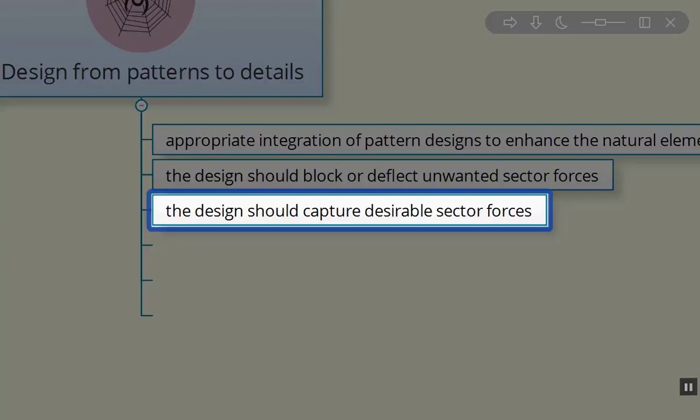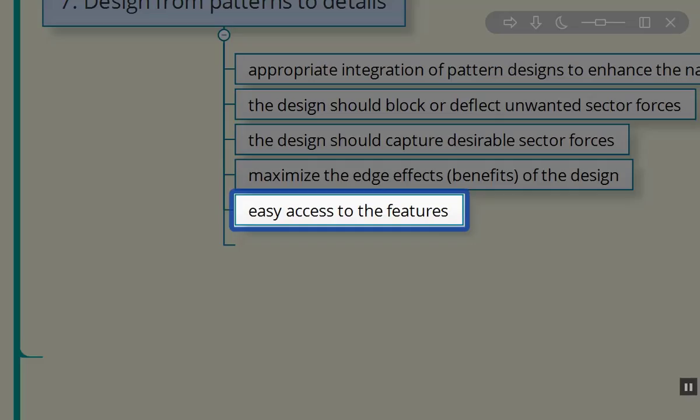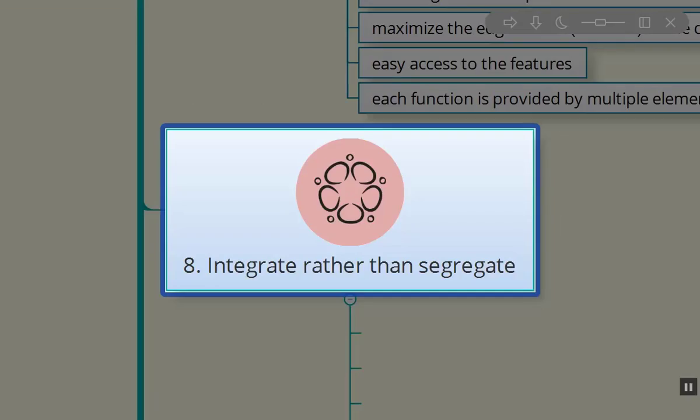They're designed to capture the desirable forces that are coming onto our site. They're to maximize the edge effects. The edge effect is the most beneficial effect in our design systems. Easy access to the features is important when we're integrating these design patterns. Each element should provide multiple function and each function should be met by the production of various elements. So we want one system to feed multiple systems and multiple resources to meet the needs of any one element.